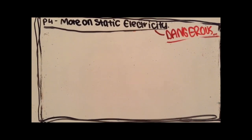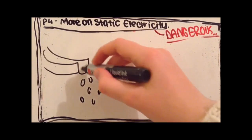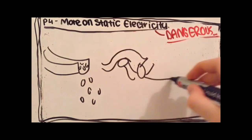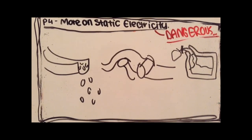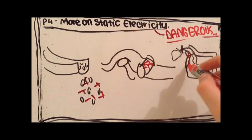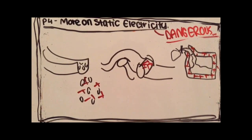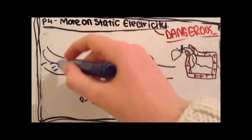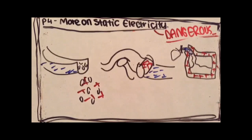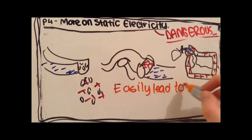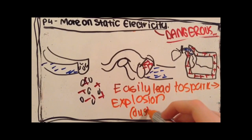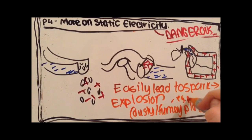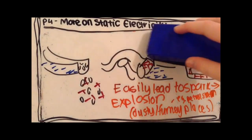Another danger of static electricity is in grain shoots, paper rollers, and fuel filling. As fuel flows out of a filler pipe, or paper drags over rollers, or grain shoots out of pipes, then static charge can build up. This can easily lead to a spark and might cause an explosion in dusty or fumy places. For example, when filling up a car with fuel at a petrol station.